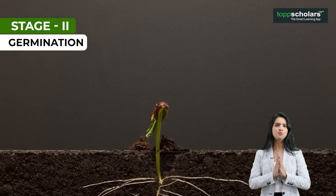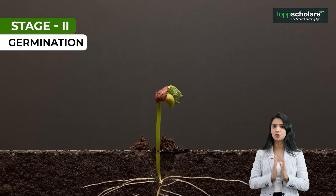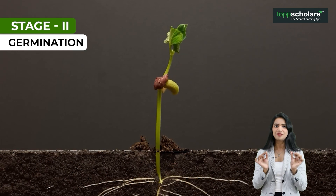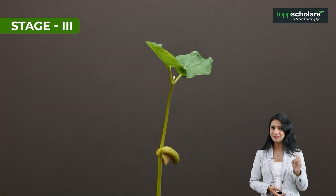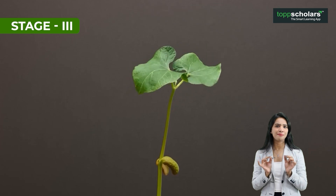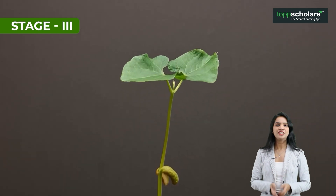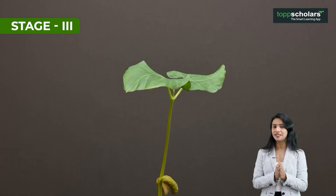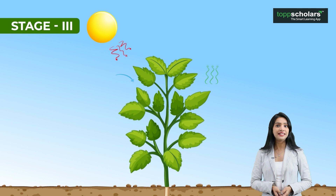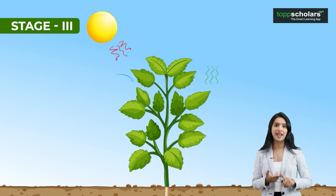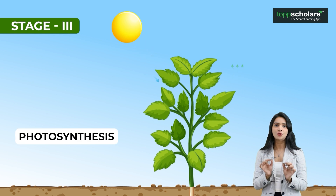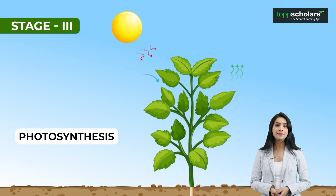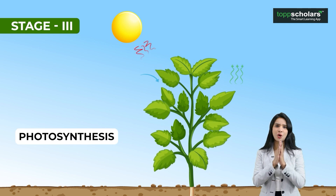Now, as the shoot pushes its way out of the soil, small leaves begin to grow from the shoot, signifying that the plant has entered Stage 3. Here you can see a young plant taking shape. This young plant is now called a seedling. The seedling uses sunlight, air, and water to make its food through a process called photosynthesis, which helps it grow stronger and taller.